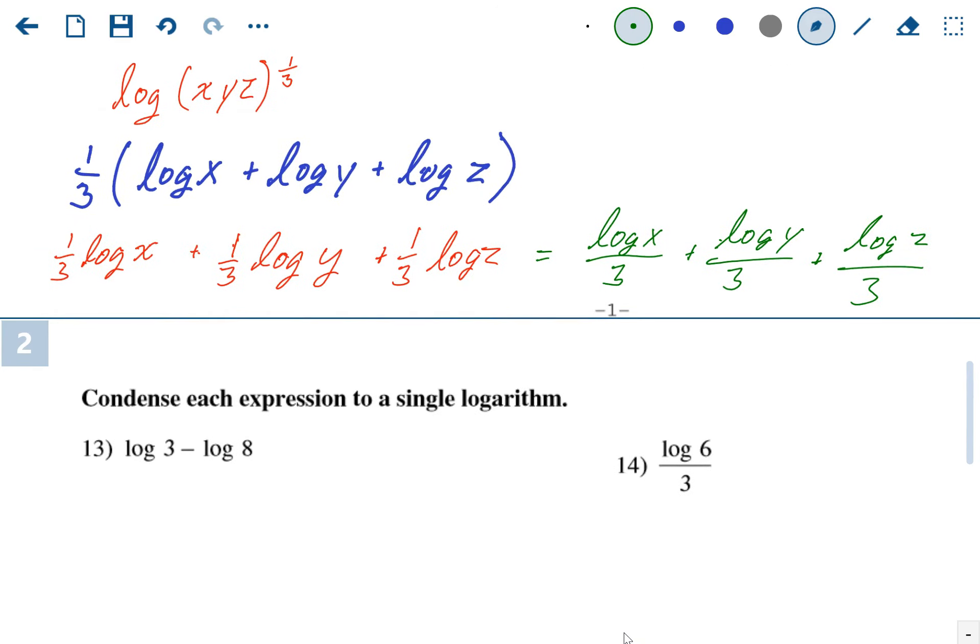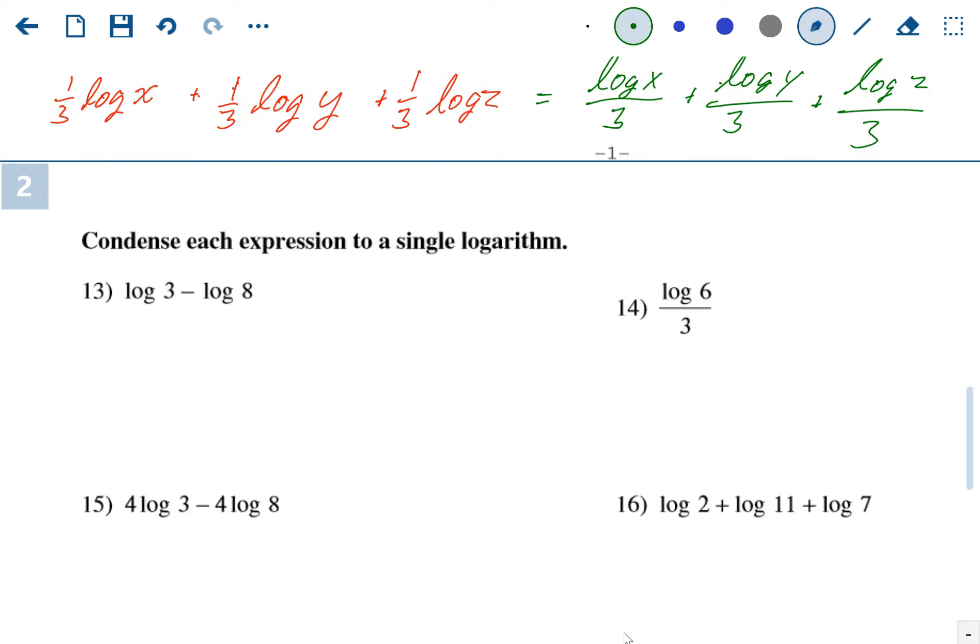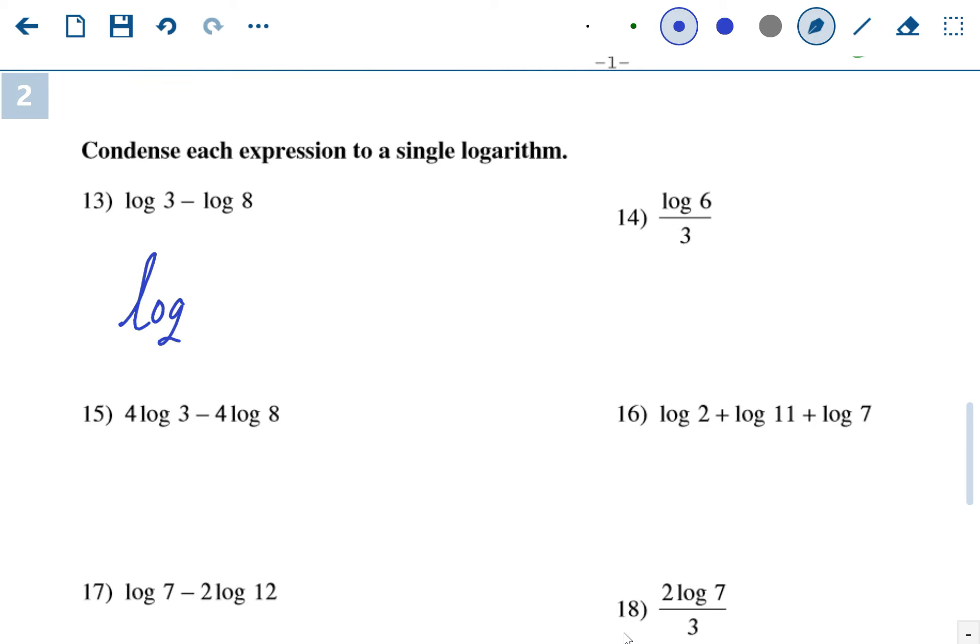The back page is condensing the logs, so writing logs as a single one. It's basically the opposite of what we just did. This first one, 13: log 3 minus log 8. It's a minus, so it's going to turn into 1 log with a division. When you're condensing them, it's always going to be a single logarithm. This one: 3 over 8.